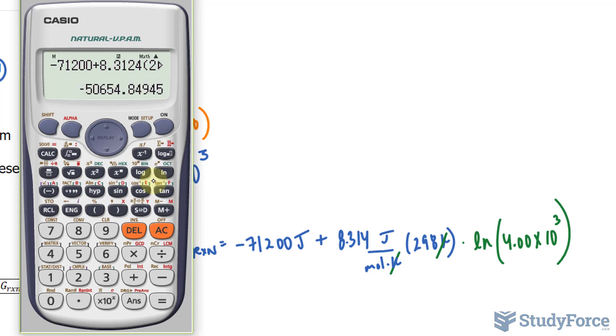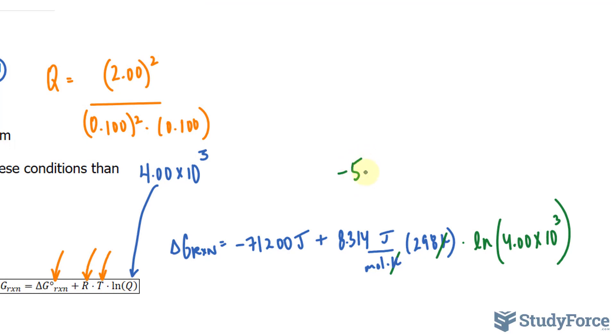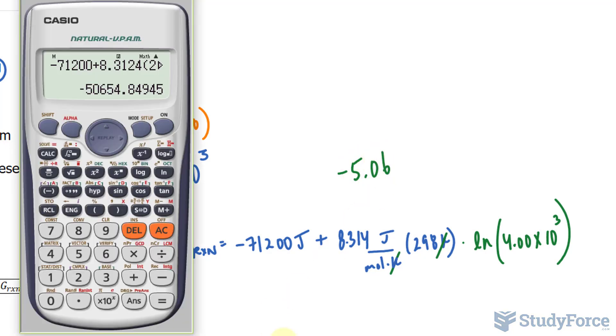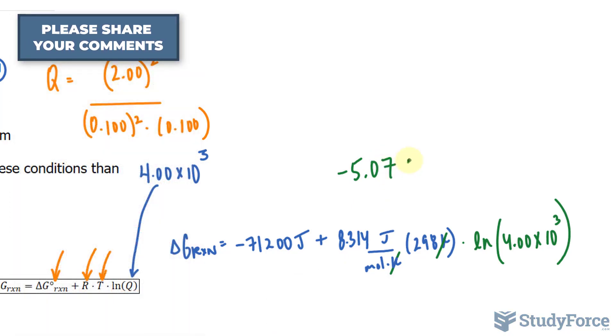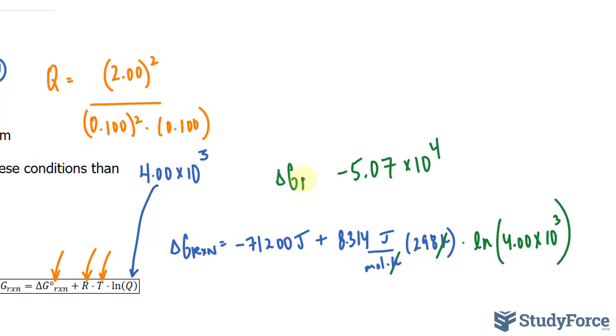We need our answer to three significant figures, so I'll write down negative 5.06. Since the first discard number is 5, we'll raise this number up to 7, times 10 to the power of 4. That's delta G of this reaction under these brand new conditions.